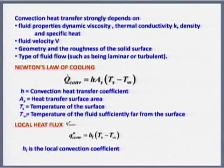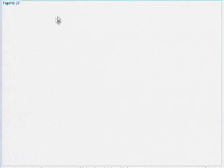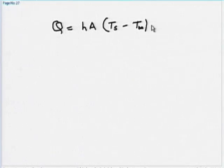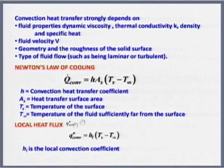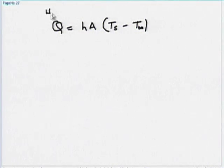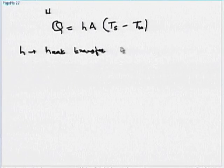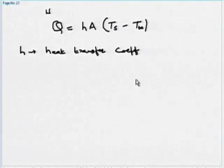Now let us get to Newton's law of cooling: Q = H·A·(Ts − T∞) when Ts is greater than T∞. If T∞ is greater than Ts, you write H·A·(T∞ − Ts), because heat transfer always goes from the hotter body to the colder body. In Newton's law of cooling, Q is in watts and H is the convective heat transfer coefficient. In conduction problems, someone fed us this H - but now the question in convective heat transfer is: how do I get H?